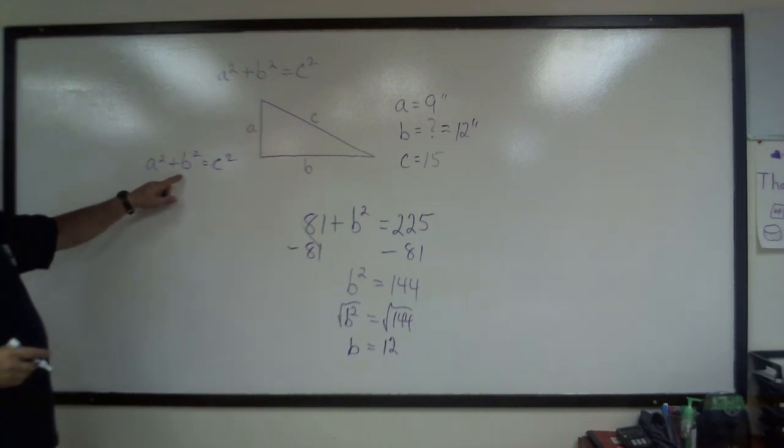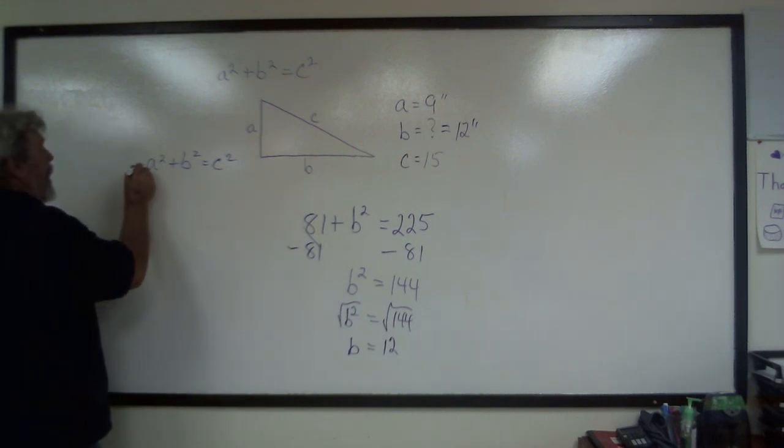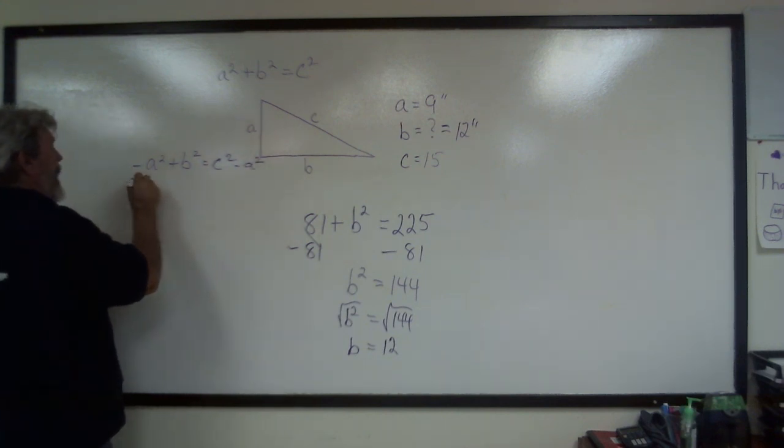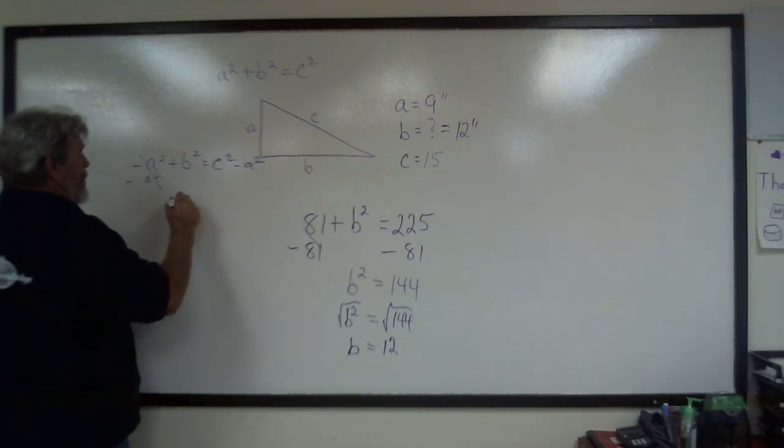I could take any one of these and move it over to here. I could say I need to find B squared, I'm going to subtract A squared. Subtract A squared. That's going to cancel each other out.